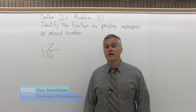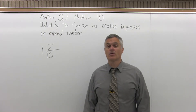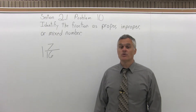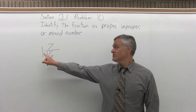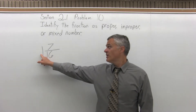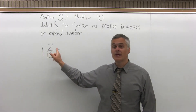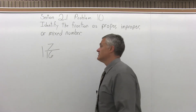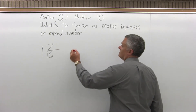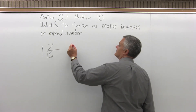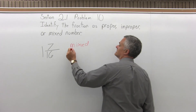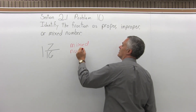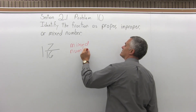It says identify the fraction as proper, improper, or mixed number. Our number is 1 and 7 sixteenths. Because we have a whole number and a fraction, this is considered to be a mixed number. 1 and 7 sixteenths is a mixed number because it has a number with a fraction.